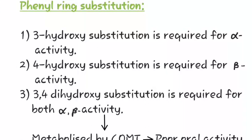In the Phenyl ring substitution, 3-Hydroxy substitution is required for alpha activity. 4-Hydroxy substitution is required for beta activity. And 3,4-dihydroxy substitution is required for both, i.e. alpha and beta activity.